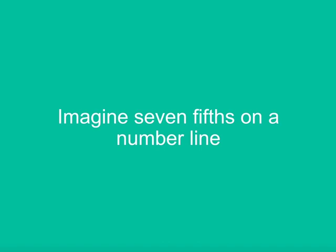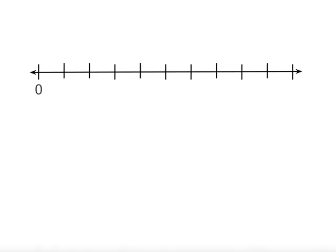Here is a tricky one. Can you imagine where 7 fifths would be on a number line? We can count along.